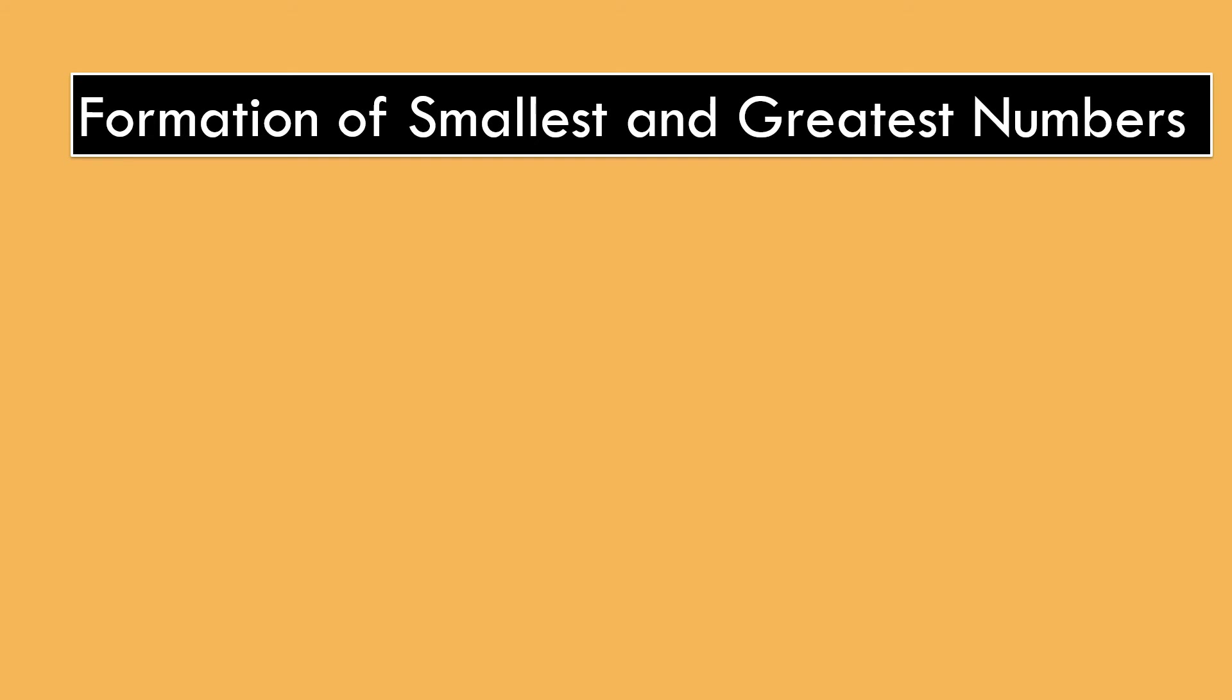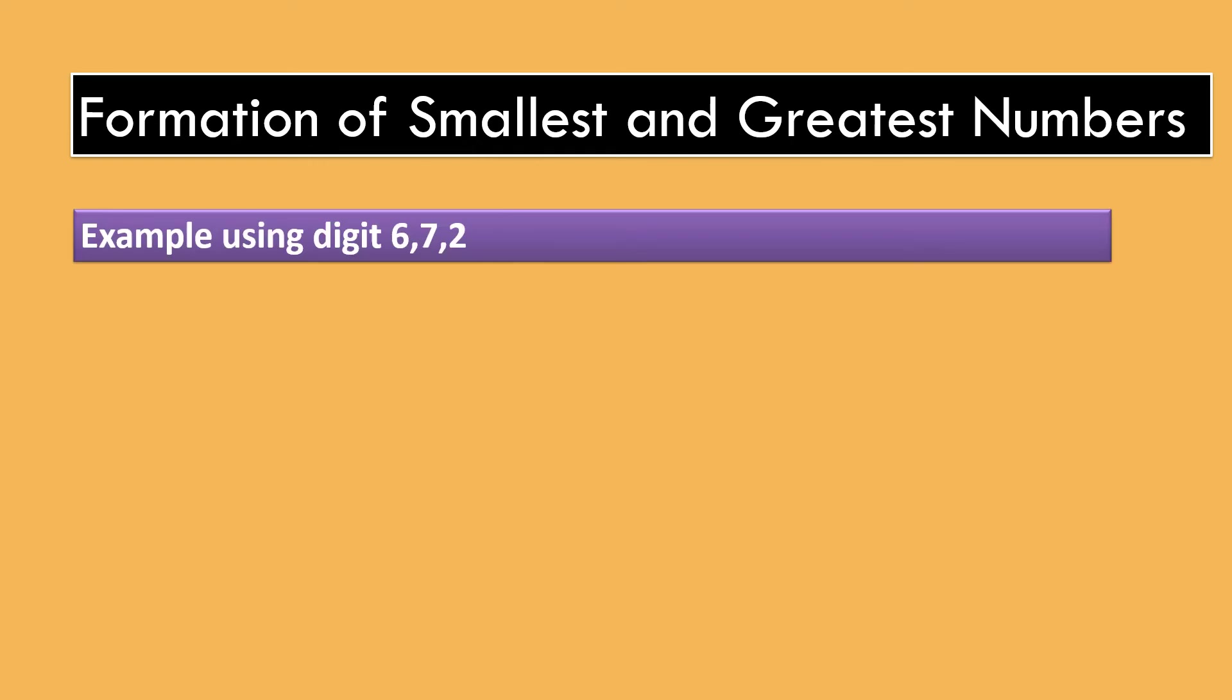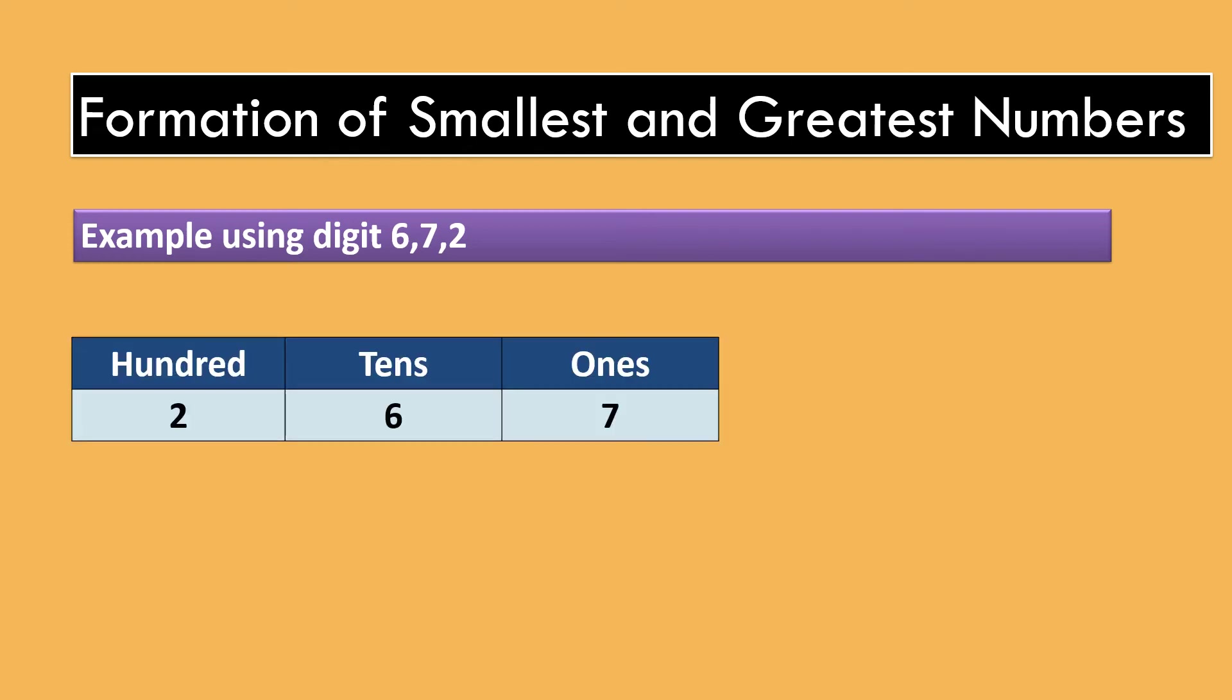Our last topic is Formation of smallest and greatest numbers. In this topic, we will learn how to form smallest and greatest number of 3 digits by using 6, 7, 2. Smallest number is formed by placing the given digits in ascending order. So, we will place 2 at 100s, 6 at 10s and 7 at 1s.